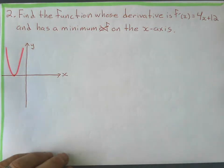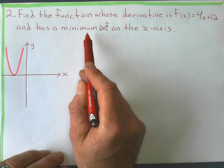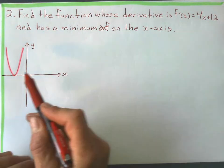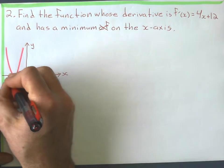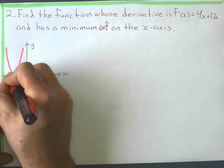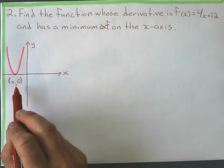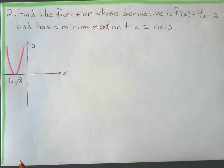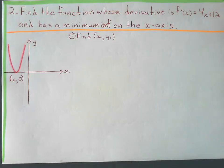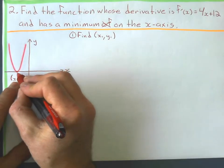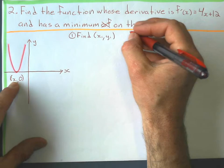Here's another example: find the function whose derivative is f'(x) equals 4x plus 12, and it has a minimum on the x-axis. What do we know about having a minimum on the x-axis? That means the coordinate is going to be (x-something, 0) — if it's on the x-axis, the y-coordinate is 0. So I do the same thing as last problem and find that x-value.